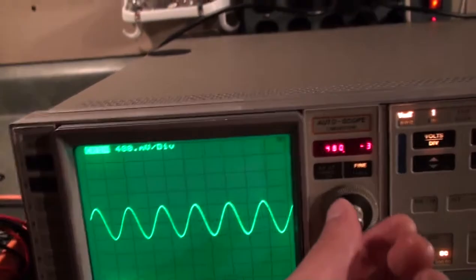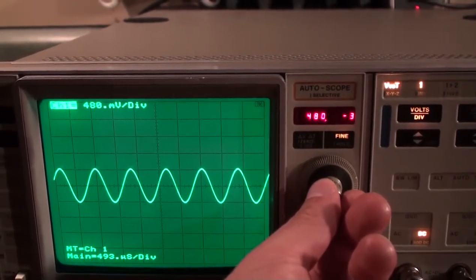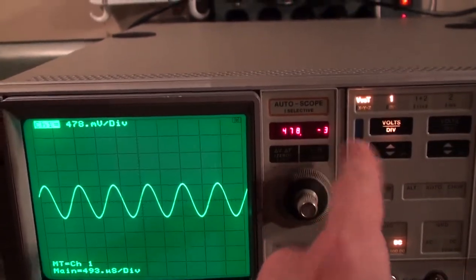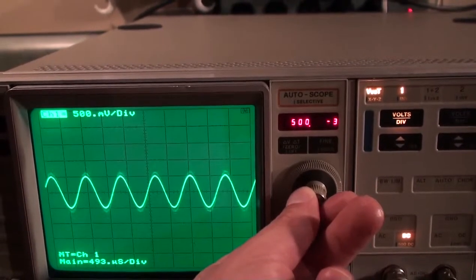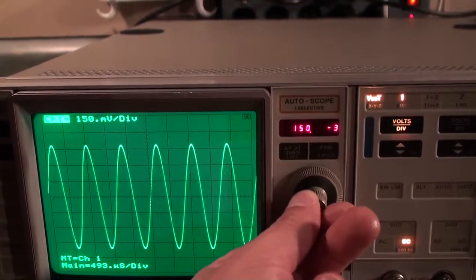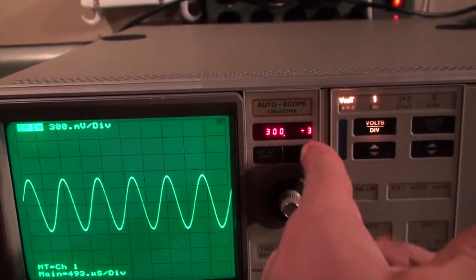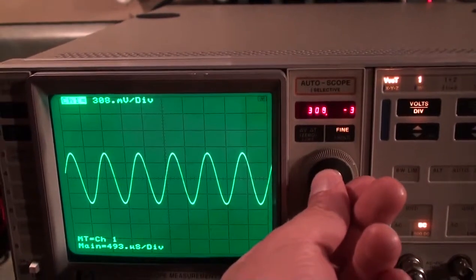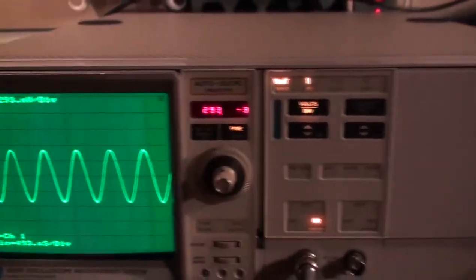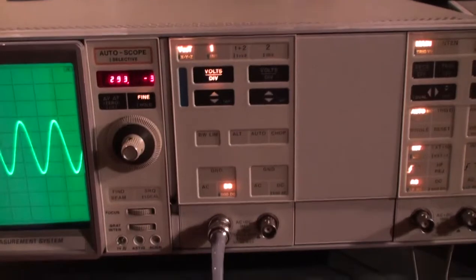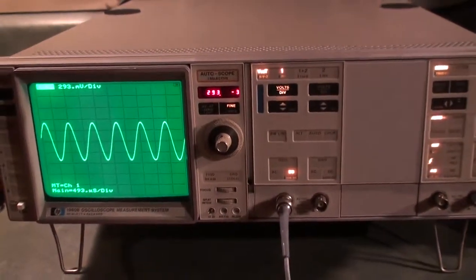thing for the volts per division. Right now we're at 480 millivolts per division and we're not on the fine setting - it goes up in increments of about 100 millivolts per division. If you want to adjust it further, you just press the fine button and you can go one millivolt per division. Extremely accurate, just a really completely different experience. I'm still trying to